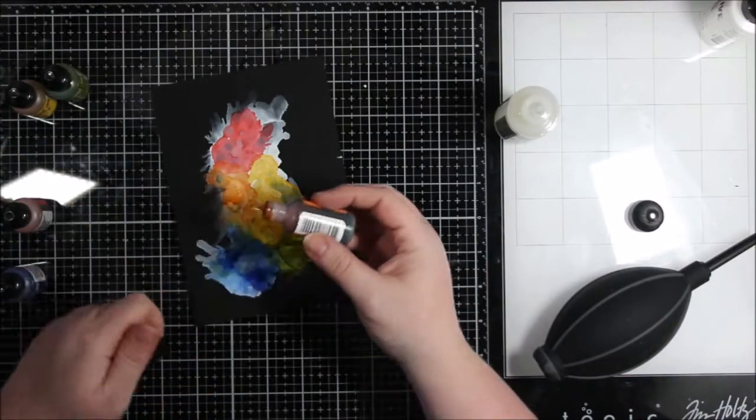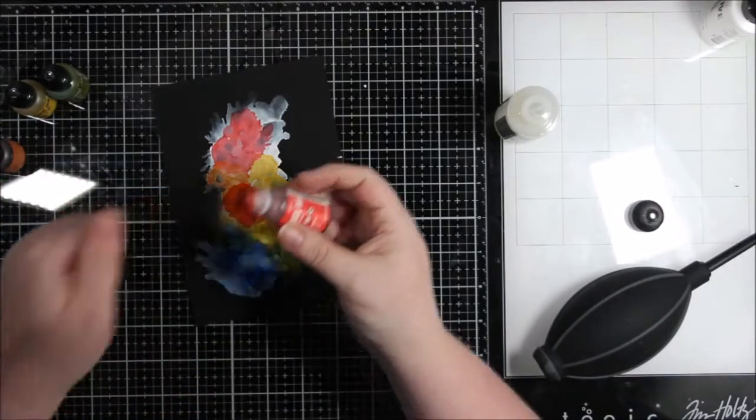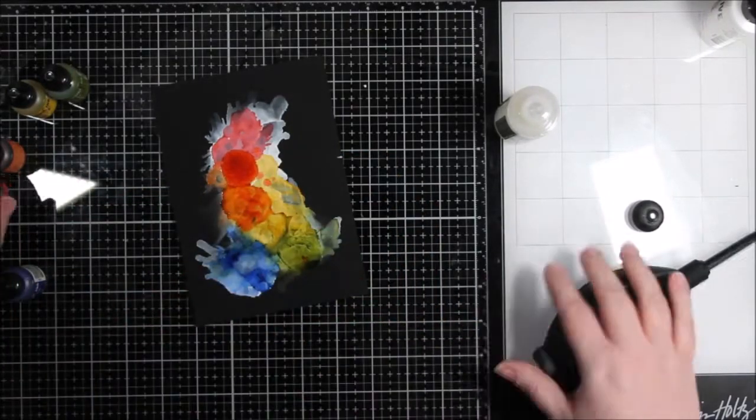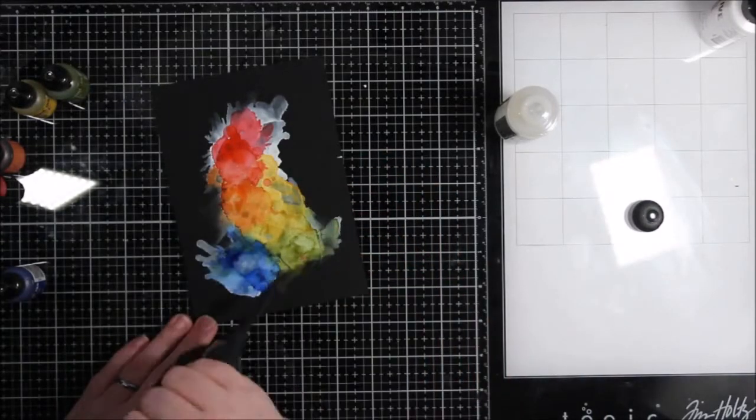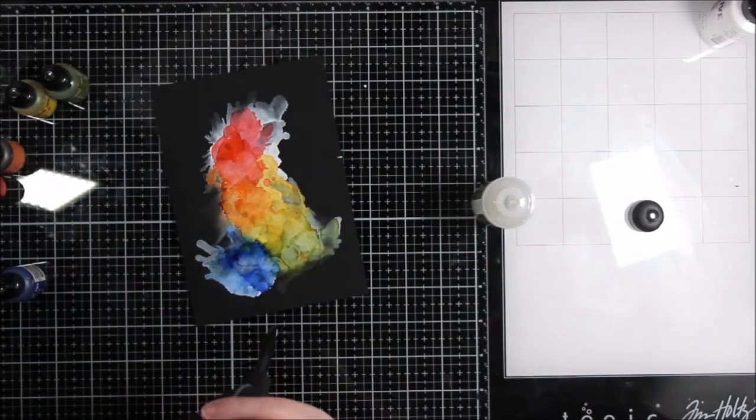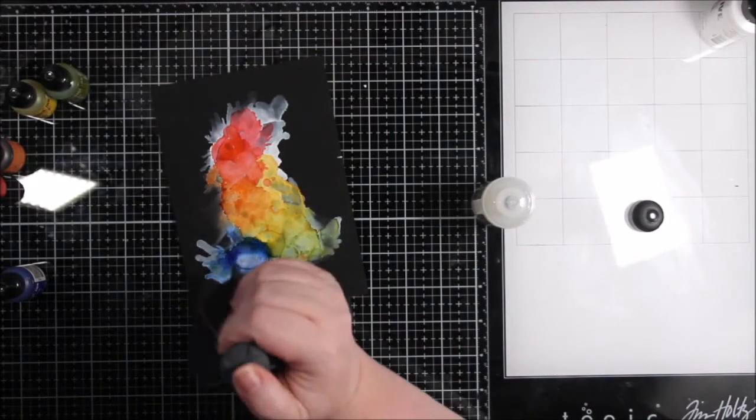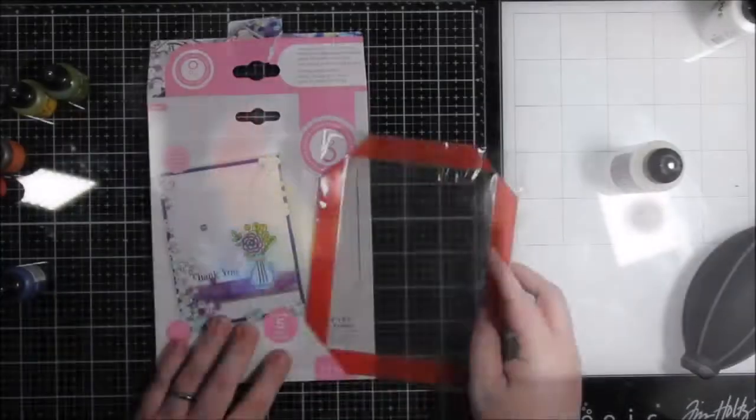So then I decided to add more color. I could have left it before that. It was cool. Actually, I really did like it a lot. But here I just decided to add a couple of drops of each of the colors and just kind of puff it around a little bit more and make those colors have some deeper areas. And then I used more of the blending solution, just kind of move things around and puff the little puffer thing.